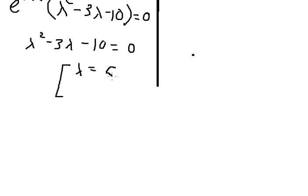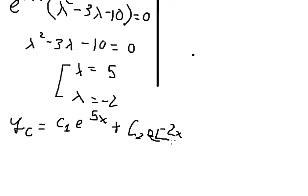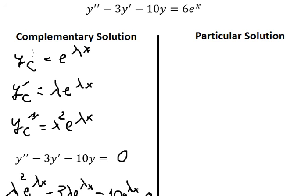We calculate and find two solutions: lambda equals five and lambda equals negative two. So yc equals c₁ e to the power of 5x — substituting lambda equals five — plus c₂ e to the power of negative 2x, substituting lambda equals negative two. This is the complementary solution.